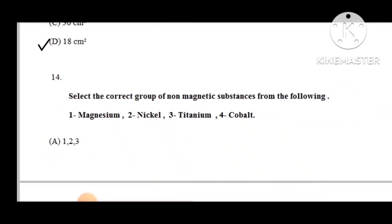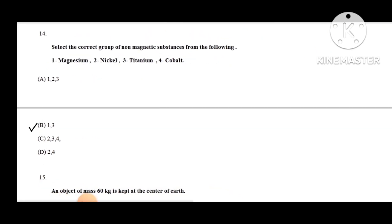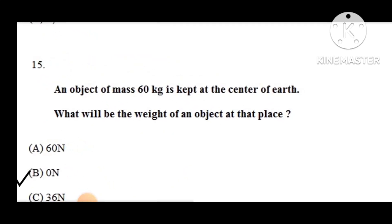Question number 14: Select the correct group of non-magnetic substances from the following. Option 1: magnesium. Option 2: nickel. Option 3: titanium. Option 4: cobalt. Option B is correct — magnesium and titanium form the group of non-magnetic substances.